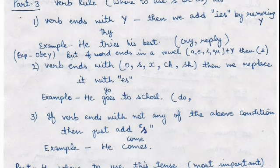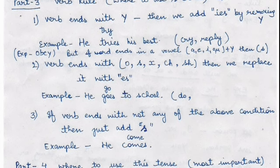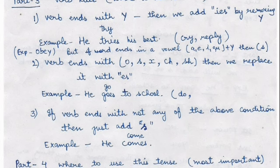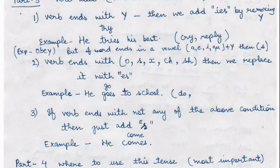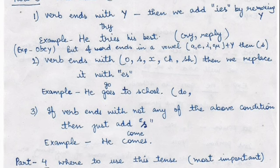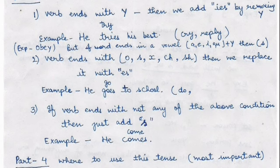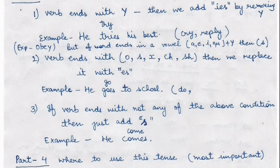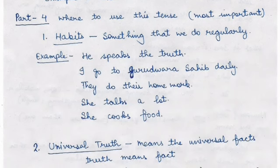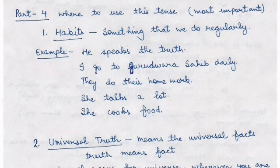More examples of ES endings include 'do' and many others. The third rule is: if the verb does not end with any of the above conditions, then we simply add S. For example, 'he comes' — since 'come' ends with E and is not in any previous category, we just add S, making 'comes'. In all remaining cases, we apply only S.